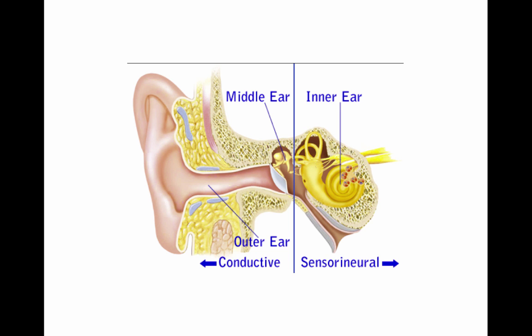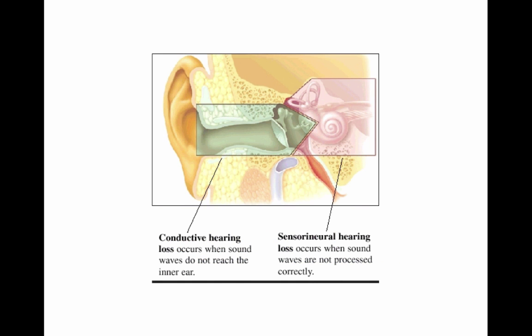A conductive hearing loss occurs in the outer ear or the middle ear. A sensorineural hearing loss occurs in the inner ear or the auditory nerve. When testing by air conduction, the scores will be abnormal for a conductive hearing loss, but the bone conduction scores will be normal because bone conduction tests the cochlea and beyond. So a conductive hearing loss occurs when sound waves do not reach the inner ear at their full strength.